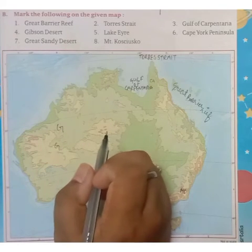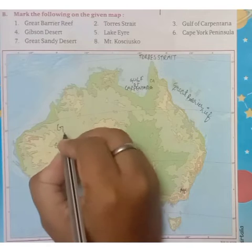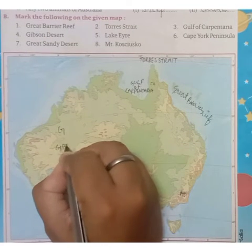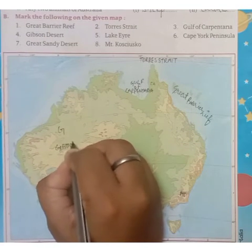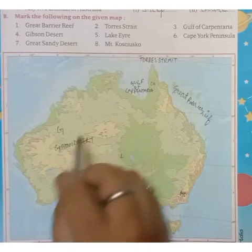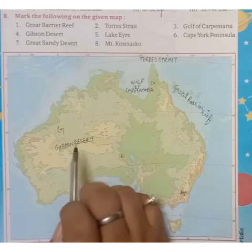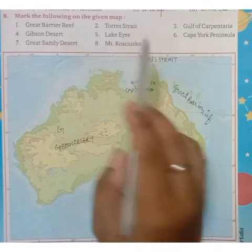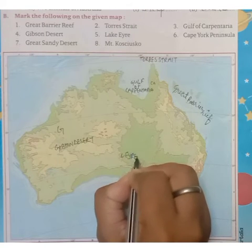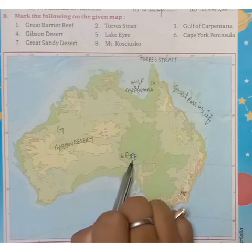The fourth one is Gibson Desert. You will write Gibson Desert here on the map. Next is Lake Eyre — Lake Eyre is located here, you will mark Lake Eyre.